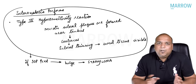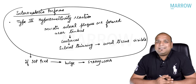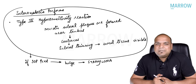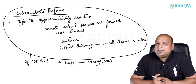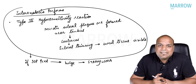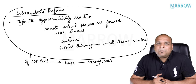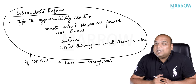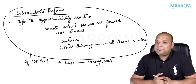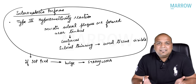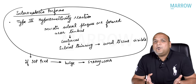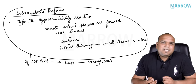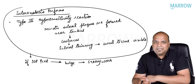Important differences between episcleritis and scleritis: episcleritis is reddish, scleritis is bluish. Episcleritis vessels blanch on phenylephrine 2.5%; in scleritis there is no blanching. These are basic differentiating features between episcleritis and scleritis.